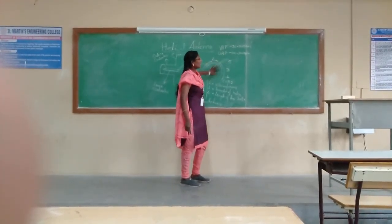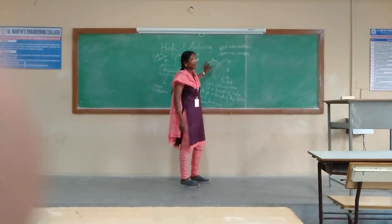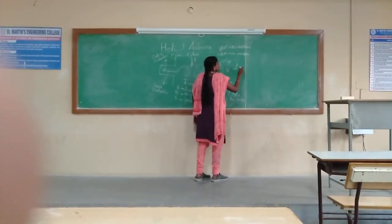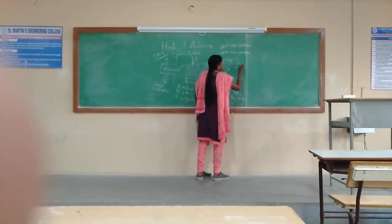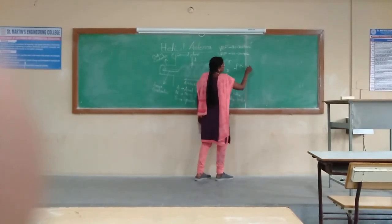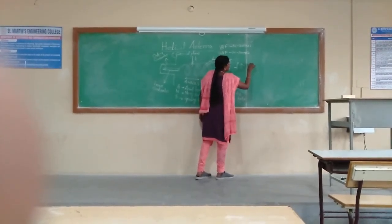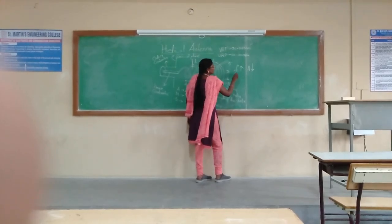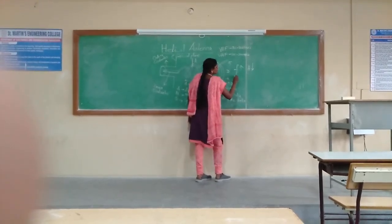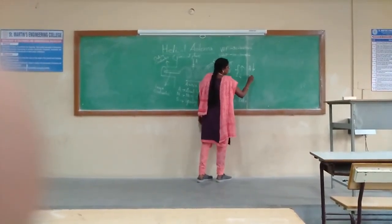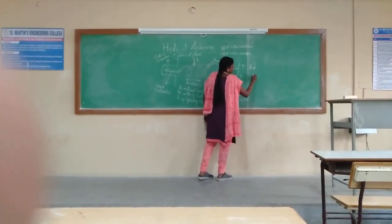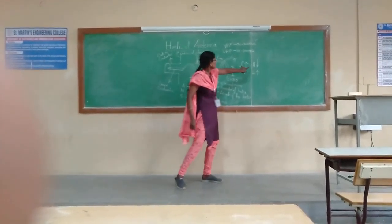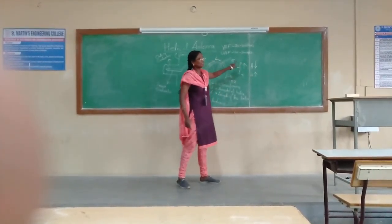Here, height and frequency both have a relationship. If frequency increases, the antenna height increases. If the frequency decreases, the antenna height also increases. So this is the relationship between antenna height and frequency.